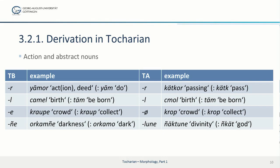There is also the Kraupe type — 'kraupe' means crowd and is distantly related to German 'Gruppe' — which goes back to old PIE action nouns. A very productive abstract formation uses the suffix -nje: for example, 'orkamnje' meaning darkness, from 'orkamo' meaning dark in Tocharian B. A very likely related form with a slightly more complex suffix are the -lune abstracts in Tocharian A, such as 'nyuktonje' meaning divinity, derived from 'nyukut', the word for god.